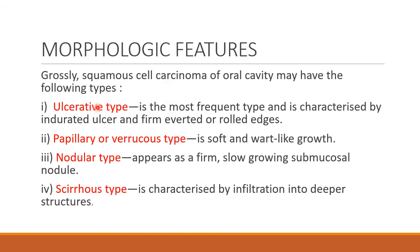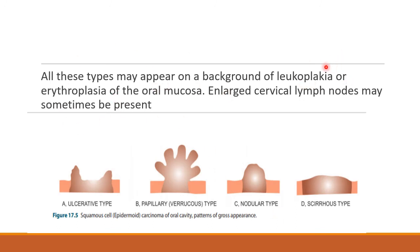Grossly, squamous cell carcinoma may appear as: ulcerative type (most frequent), characterized by an indurated ulcer with firm, everted or rolled edges; papillary or verrucous type, which is a soft wart-like growth; nodular type showing a firm, slow-growing submucosal nodule; and sclerus type characterized by infiltration into deeper structures. All these types may appear on the background of leukoplakia or erythroplasia, which are premalignant conditions. Enlarged cervical lymph nodes may sometimes be present.